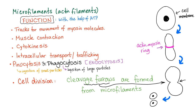Microfilaments are also involved in intracellular transport and trafficking, as well as endocytosis — two types: pinocytosis for small particles and phagocytosis for large particles. During cell division, they form cleavage furrows. The cell forms an actin-myosin ring, which creates cleavage furrows and then divides the cell into two daughter cells.